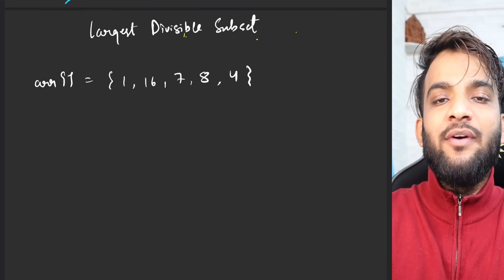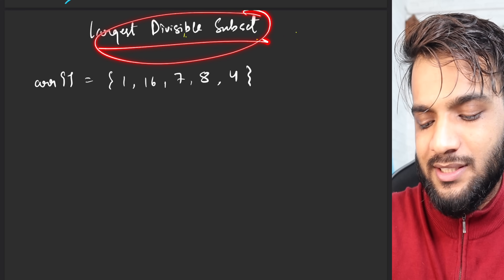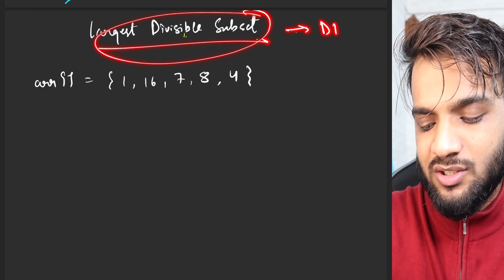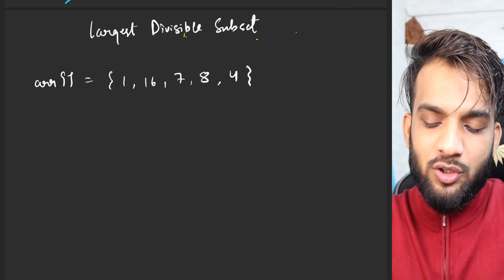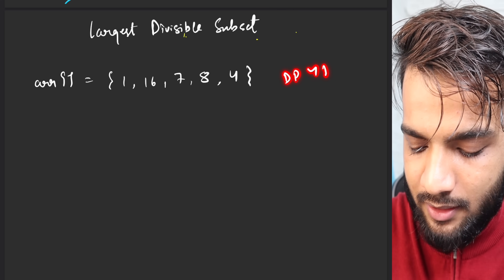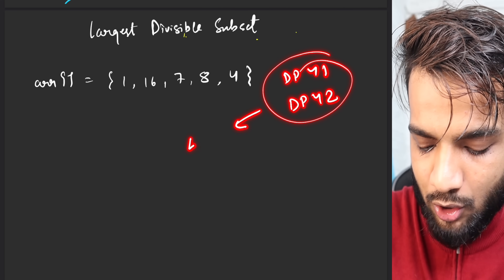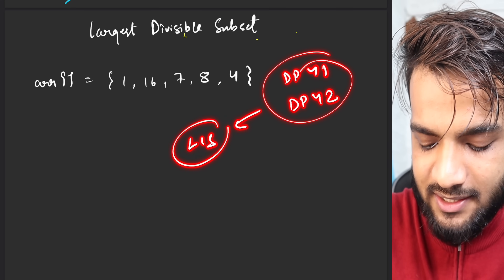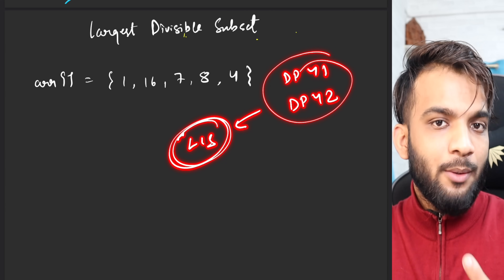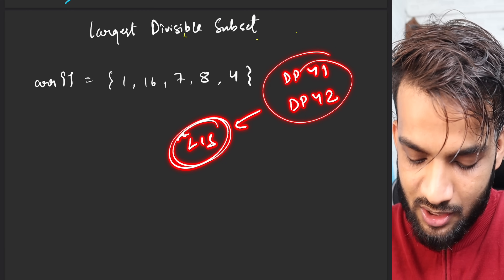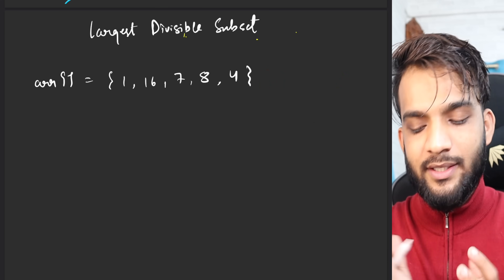Hey everyone, welcome back to Take You Forward. Today we will be solving the problem 'Largest Divisible Subset', which is DP44. Before this, DP41 and DP42, which are based on Longest Increasing Subsequence, should have been done because we are following the pattern of Longest Increasing Subsequence. If you know this, then only solve this problem.